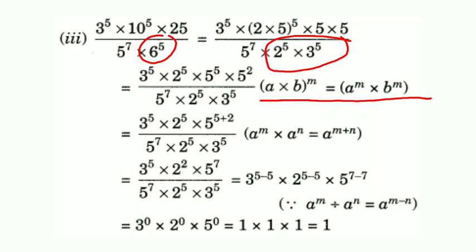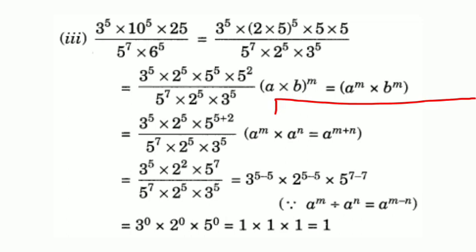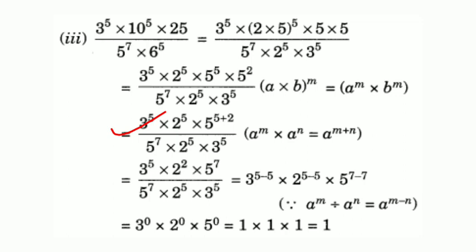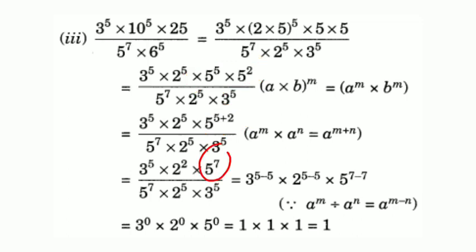Applying the law: (A into B) all raised to M equals A raised to M into B raised to M. So 2 into 5, all raised to 5, gives 2 raised to 5 into 5 raised to 5. And 2 into 3, all raised to 5, gives 2 raised to 5 into 3 raised to 5. On the numerator, combining 5 raised to 5 and 5 squared using the multiplication law: 5 raised to 5 plus 2 equals 5 raised to 7.